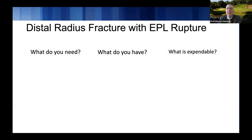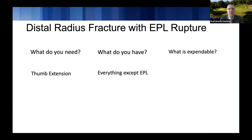For a patient with an EPL rupture, what do you need? You need thumb extension, because even though they have an EPB, they can't extend the terminal IP joint. What are your options? In this situation, you have everything except the EPL. What is expendable? You could use your index or small finger extensor, the EPB, or the palmaris longus. You wouldn't want to take the middle finger extensor — that's not expendable, and you'd lose middle finger extension. The commonly used options for thumb extension are the EIP, EDQ, EPB, or palmaris longus.